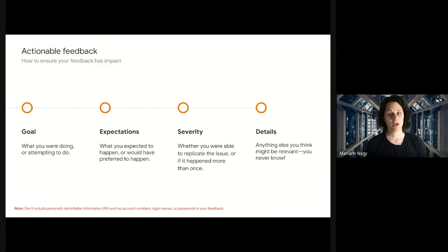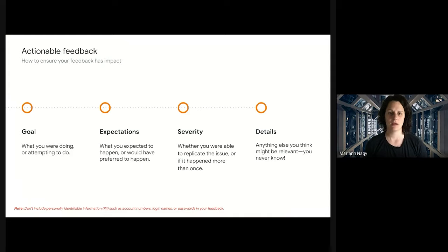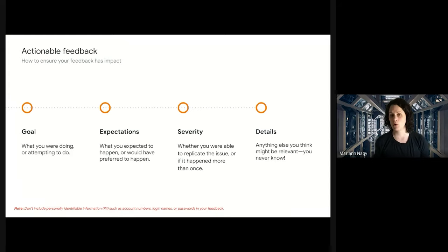So to ensure that we can act upon your feedback and improve the tool, we need to understand your goal — what were you trying to do, what are you trying to accomplish? We need to understand your expectations: what did you expect to happen and what happened? Tell us if you were able to replicate the problem or if it happened more than once, and give us all the details — the more, the better. You never know which piece of information will enable us to identify the core problem and implement something that will help.